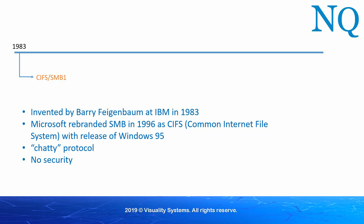Over the years, it became clear that there were at least two issues with SMB1. The first was its inefficiency. It was known to be rather chatty, that is, communicating back and forth between the client and server before anything was really accomplished. The second problem was its lack of security. Remember that back then, security really wasn't much of an issue as it is today. The SMB1 protocol is over 30 years old and it was not designed for the kind of attacks that users now face.